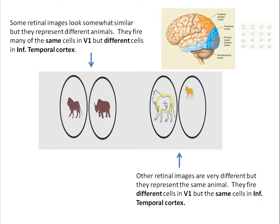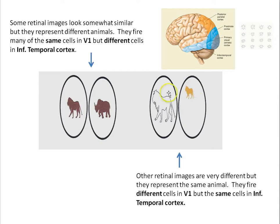Here's the lion — big and not colored. Here's a small lion that's yellow. The V1 cells will show different patterns of activation because these are very different retinal images, but the same cell down in the inferior temporal cortex will be firing because it's a lion. The cells further down the pathway don't care if it's a different size, color, or whether it's moving — they respond to lions.